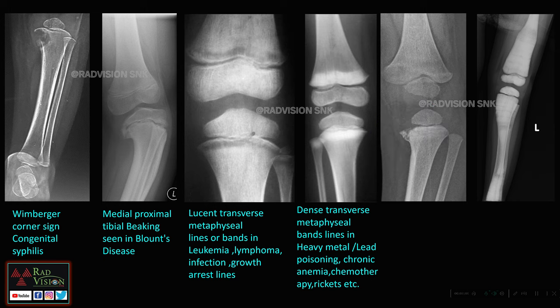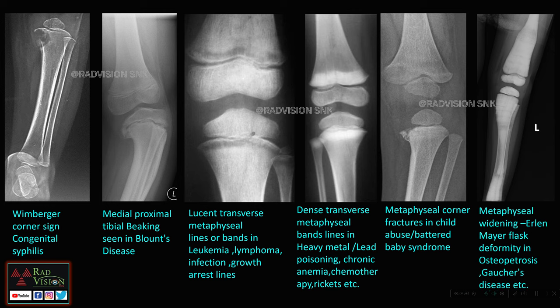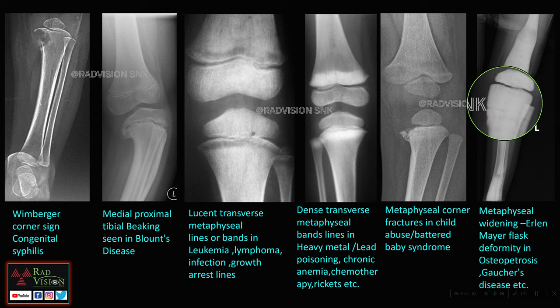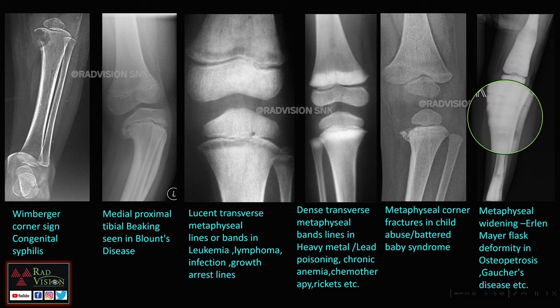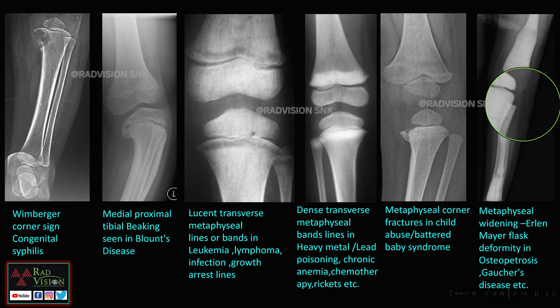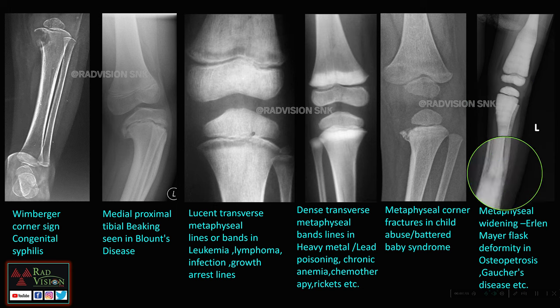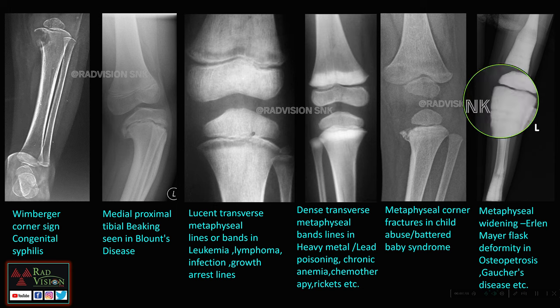If there are fractures of the posterior ends of the ribs along with a suspicious history in a child, definitely suspect child abuse or battered baby syndrome. Here you can see metaphyseal widening with growth arrest lines, classically seen in osteopetrosis. This is the Erlenmeyer flask deformity, which can also be seen in osteopetrosis or Gaucher's disease.